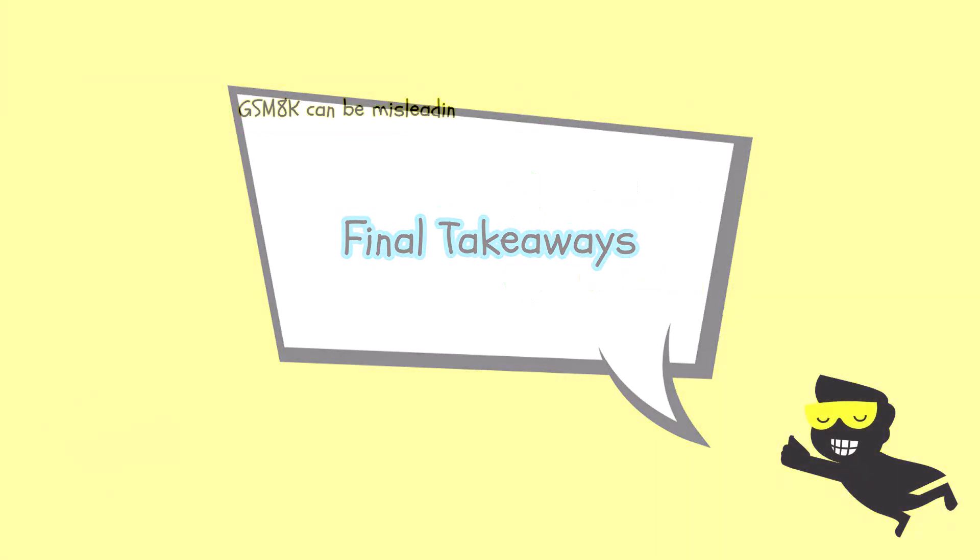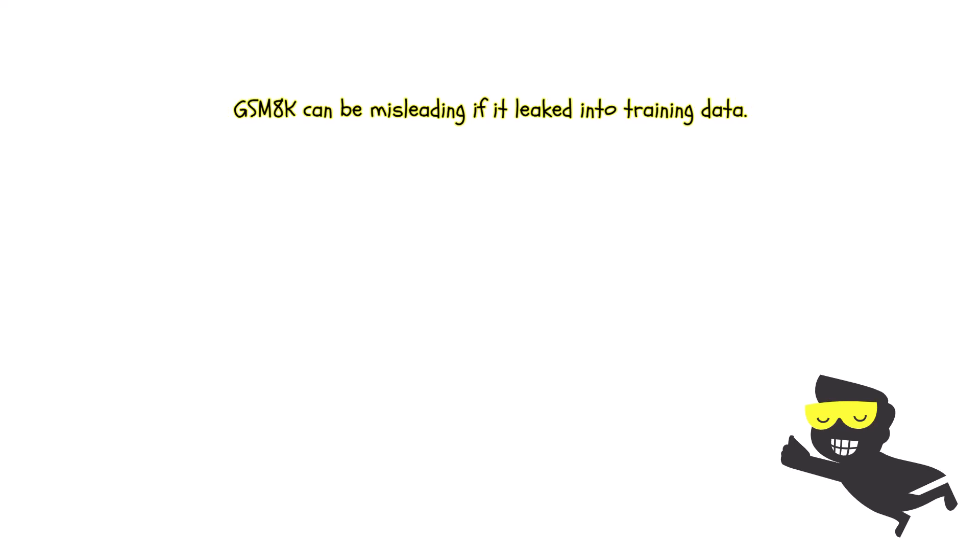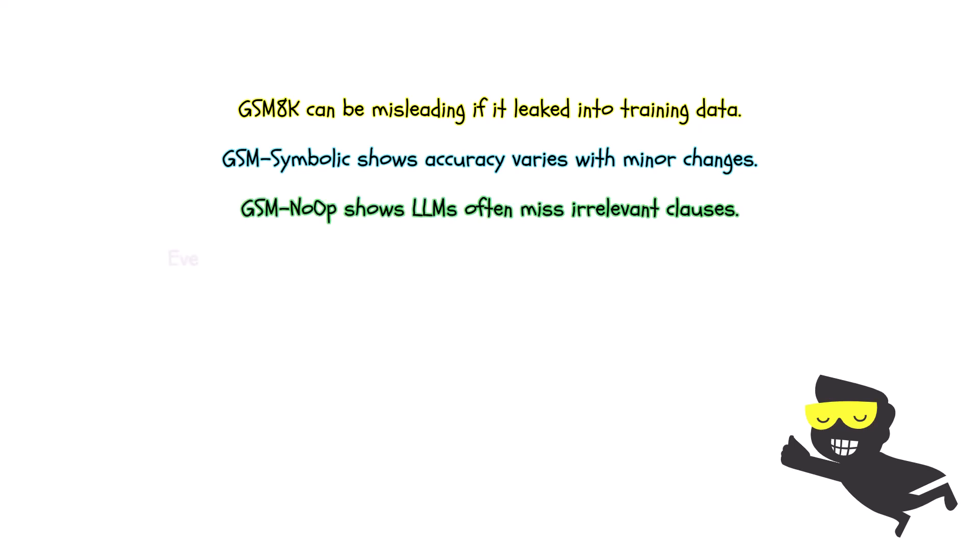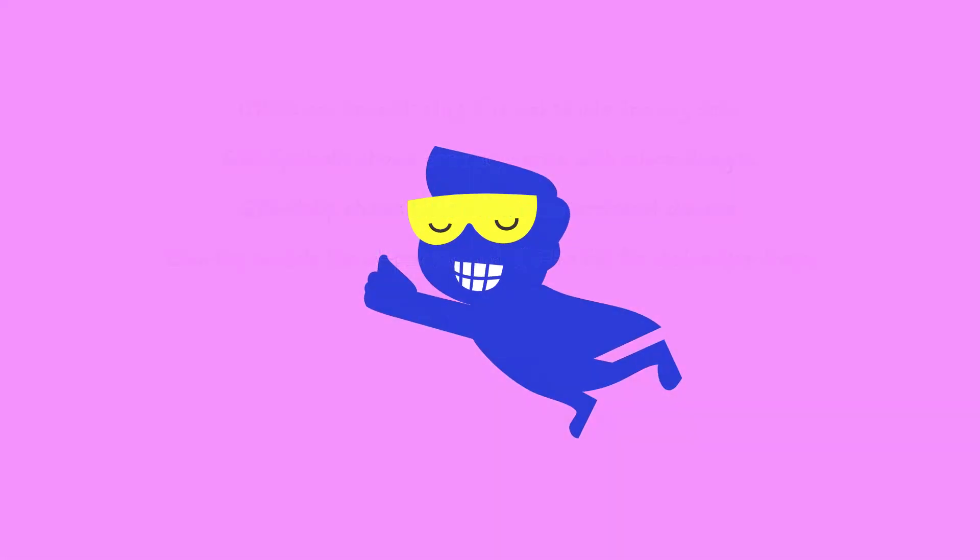When it comes to final takeaways, GSM-8K alone can be deceptive. If the data have leaked into the model's training, GSM-Symbolic reveals high variance in accuracy when you change small details, and GSM-NoOp reveals that LLMs can't always figure out when a clause is relevant. Finally, even the O1 Preview and GPT-4O, which are among the better performers, still fall for distraction traps. That is it. The bottom line is that scoring high on a small fixed dataset doesn't mean you've solved the bigger problem of mathematical reasoning. I think it's a fun one. Let me know, and I'll see you in the next video.